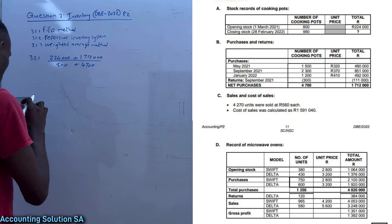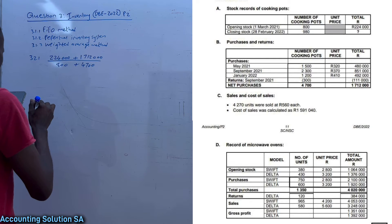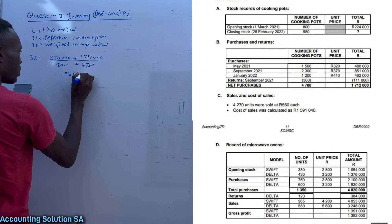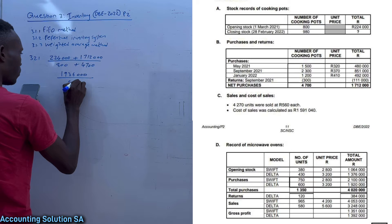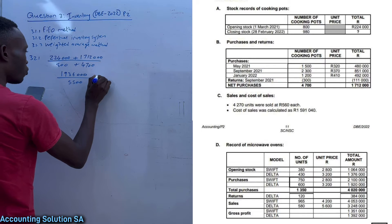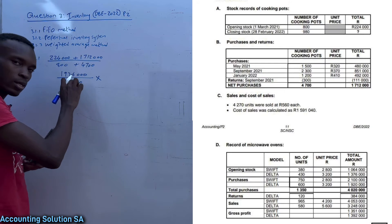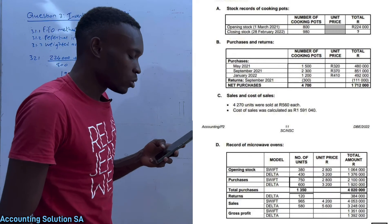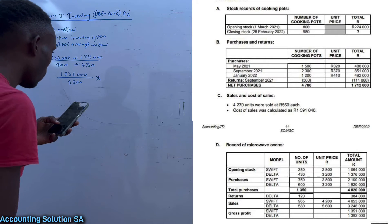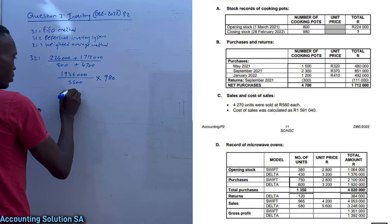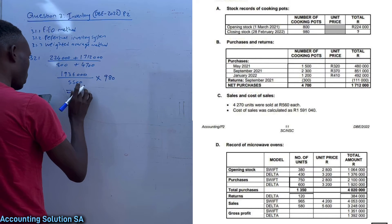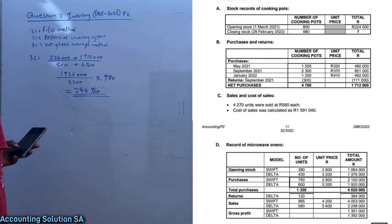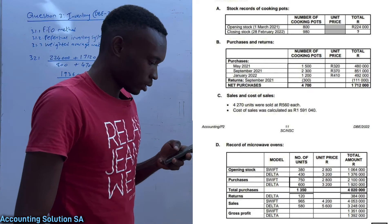The total value on top comes to 1,936,000, and we divide by 5,550 units to get the average price per unit. We then multiply by the remaining closing inventory units, which is 988 units from the table. The answer is 344,960 — that is how you get those four marks for question 3.2.1.